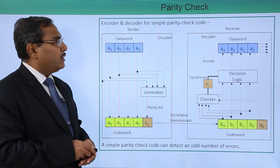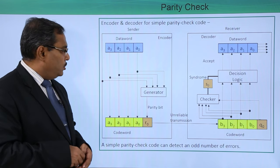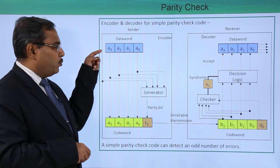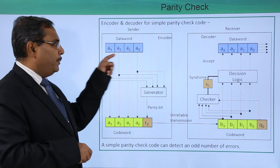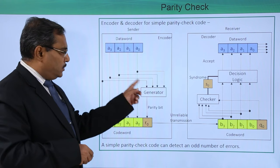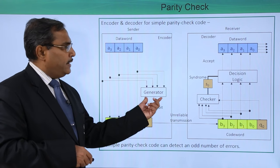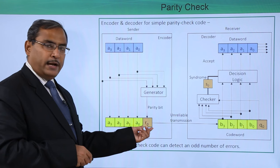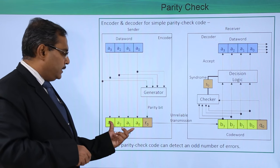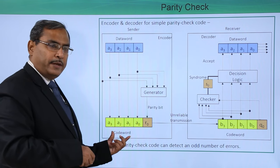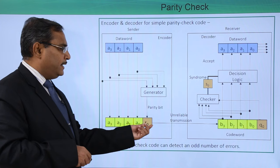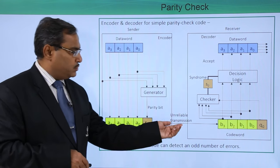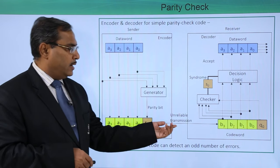So, encoder and decoder for simple parity check code. Here we are having the data word of 4 bits. This is the parity generator, and this parity generator will generate a parity bit. From the data word, after adding this parity bit, we are getting the code word, and that will be transmitted through some unreliable transmission.